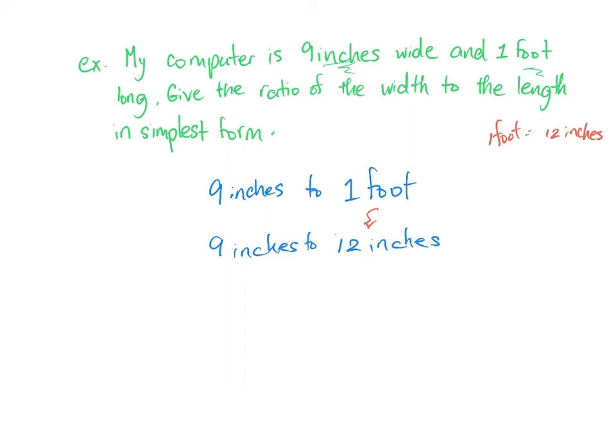So now we have the ratio 9 inches to 12 inches. Now, once it's in the same unit, there is no need to have the units anymore in your ratio. So we actually now have a ratio of 9 to 12. And so as we discussed in our previous example, in order to simplify this, you want to find the GCF, the greatest common factor.